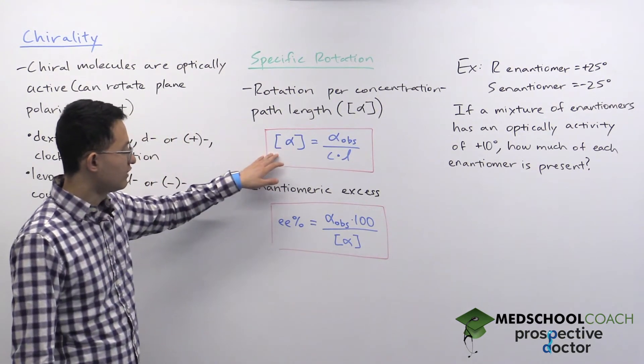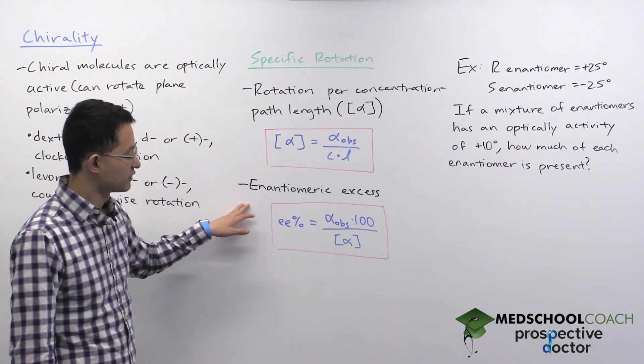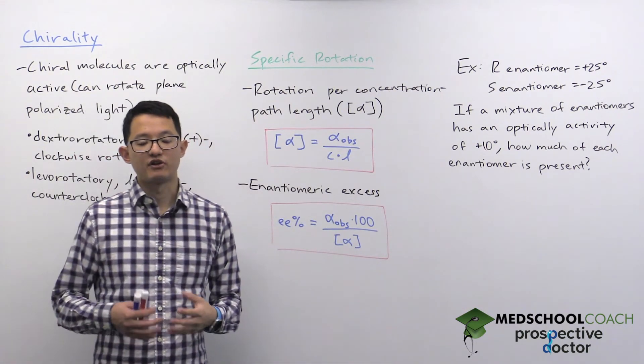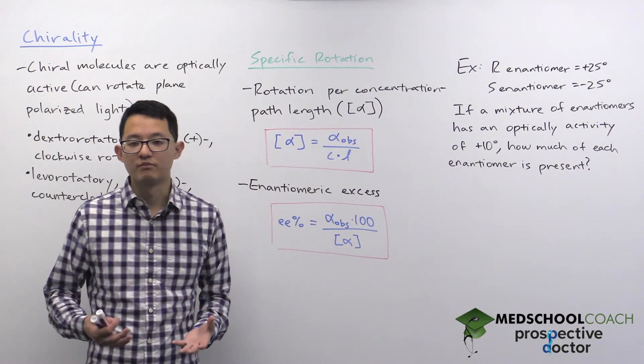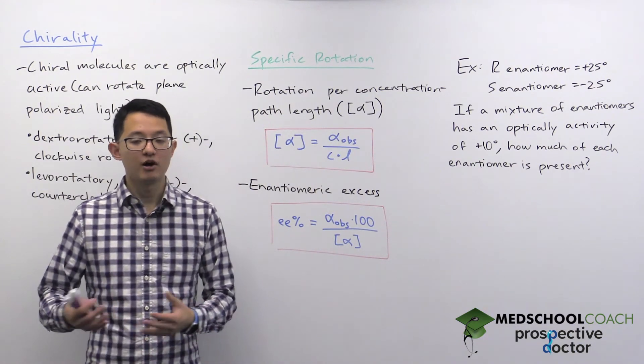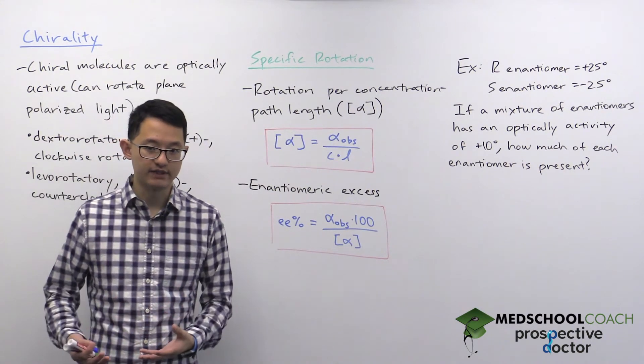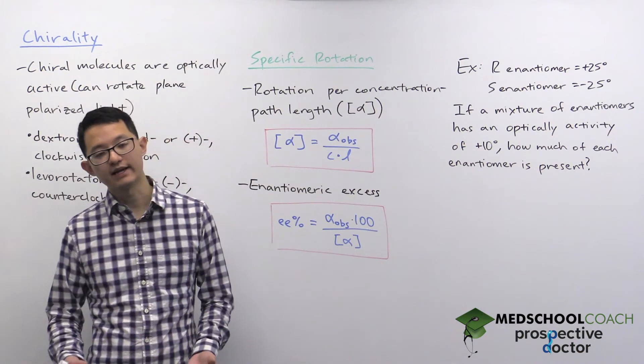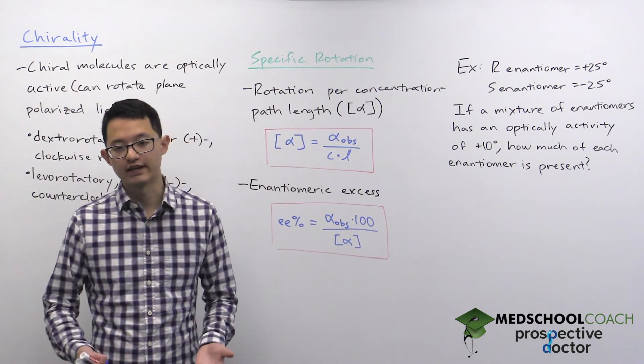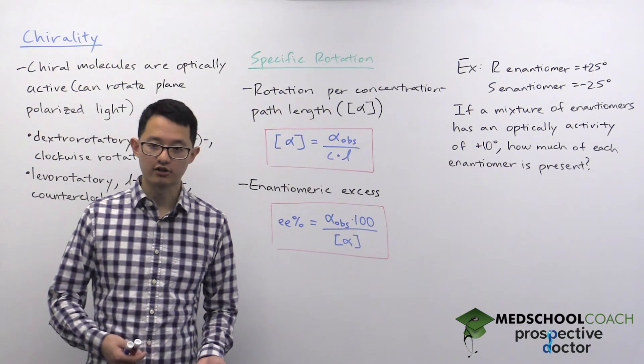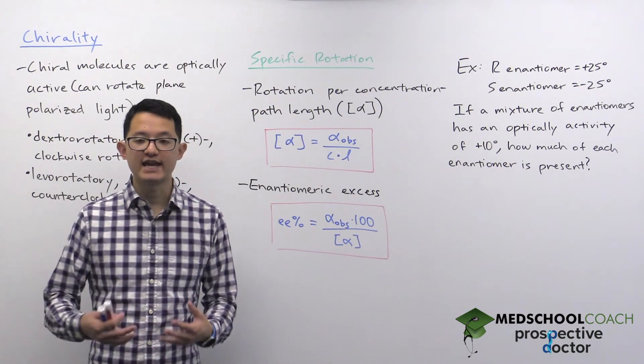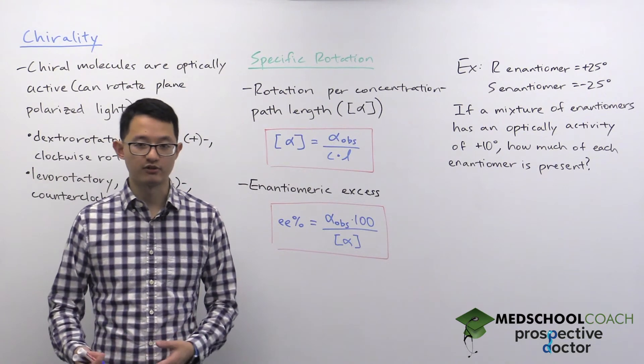This value is actually pretty helpful because it allows us to calculate what is called the enantiomeric excess. Enantiomers are isomers that are non-superimposable mirror images of each other. They have equal but opposite optical activity, which means if one rotates light clockwise 37 degrees, then its enantiomer will rotate plane polarized light counterclockwise at 37 degrees as well. Same magnitude but opposite directions.